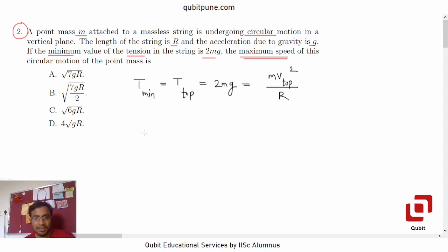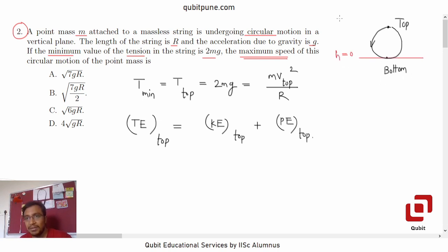Now, if we decide to write down the total energy at the top, then it will be the addition of the kinetic energy at the top plus the potential energy at the top. If we assume that the datum is the bottom plane, that is the lowest point in the circular motion, suppose this is the plane of the circular motion, this is the top position, and suppose this is the bottom position, and if we assume this bottom position as our datum, so h is 0 here, then what will be h here? H will be 2R.